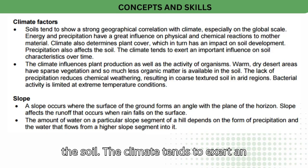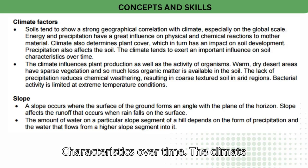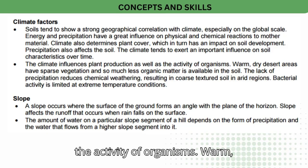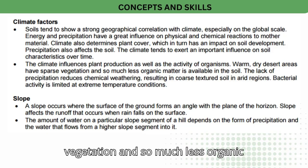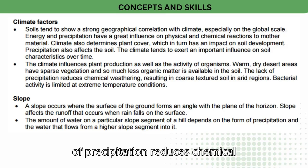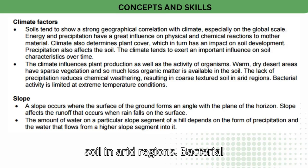Precipitation also affects the soil. The climate tends to exert an important influence on soil characteristics over time. The climate influences plant production as well as the activity of organisms. Warm, dry desert areas have sparse vegetation and so much less organic matter is available in the soil. The lack of precipitation reduces chemical weathering, resulting in coarse textured soil in arid regions.